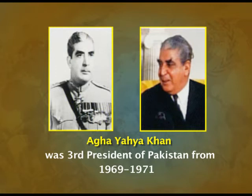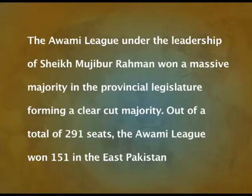Aga Yahya Khan was the third president of Pakistan from 1969 to 1971. In the general elections held in December 1970, the Awami League under the leadership of Mujibur Rahman won a massive majority. Out of a total of 291 seats, the Awami League won 151 seats in East Pakistan. In West Pakistan, the largest party was the Pakistan People's Party headed by Zulfikar Ali Bhutto, which won 81 seats.